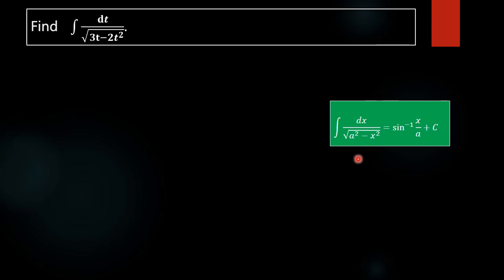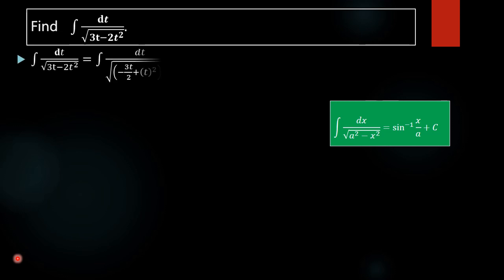In order to do that, we have to apply the completing the square method. To apply that method, the coefficient of t squared must be 1.